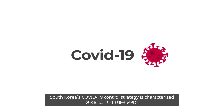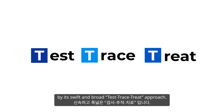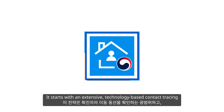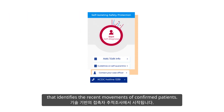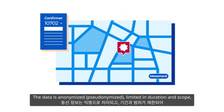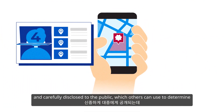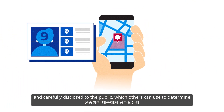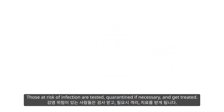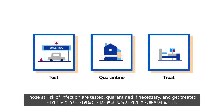South Korea's COVID-19 control strategy is characterized by its swift and broad test, trace, treat approach. It starts with extensive, technology-based contact tracing that identifies the recent movements of confirmed patients. The data is anonymized, limited in duration and scope, and carefully disclosed to the public, which others can use to determine whether they may have come in contact with any confirmed case. Those at risk of infection are tested, quarantined if necessary, and get treated.